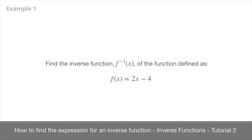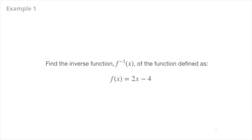We now learn how to find the expression of an inverse function, and we're going to do this with some examples. As a first example, we're asked to find the inverse function of the function defined as f of x equals 2x minus 4.